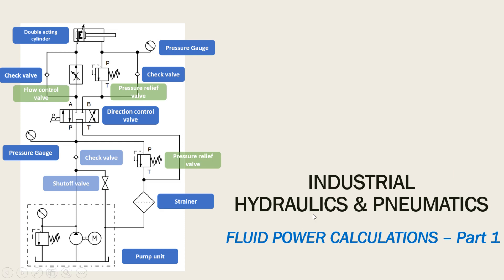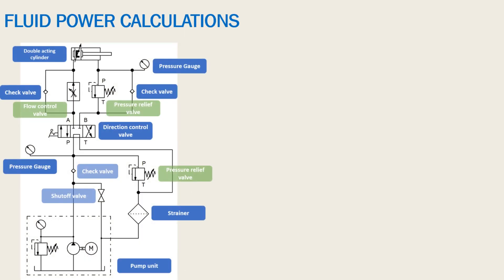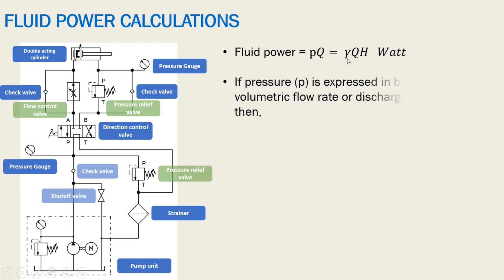In this video we'll try to understand how to find out the fluid power in hydraulics and pneumatics. We have shown one circuit over here and we have to derive the expression for fluid power in terms of pressure and discharge. We can prove that fluid power is pressure into discharge, or gamma times q times h.